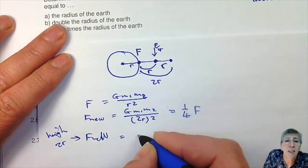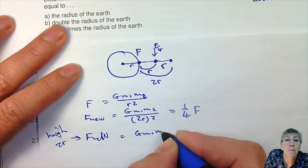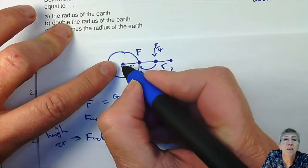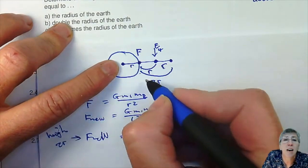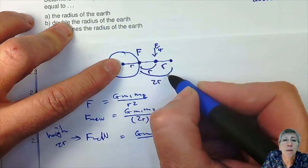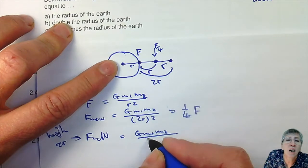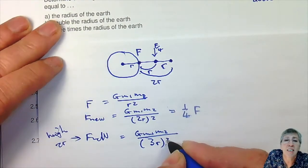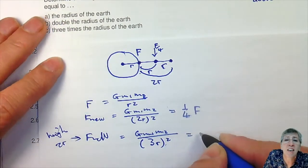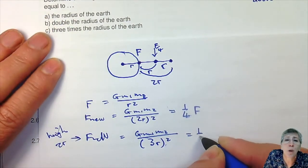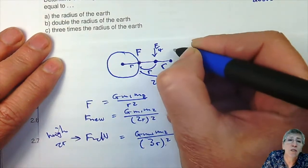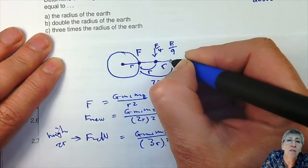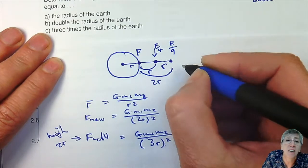The new force is G M1 M2 over the distance between centers squared. Being 2R above the surface means 3R between the centers. That gives one ninth of the original force, so over there you experience F over 9.